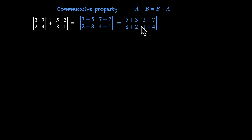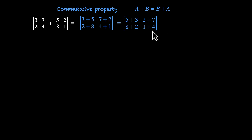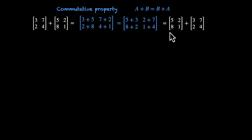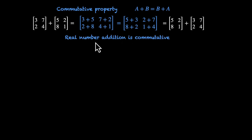We can do the same for the others: 2+7, 8+2, and 1+4. For this element, 3 and 5 don't care whether they are in a matrix — 3+5 can be written as 5+3. Now we can say we have two matrices: the first elements [5, 2, 8, 1] and the second elements [3, 7, 2, 4]. Notice we've flipped the order — we started with [3, 7, 2, 4] and now we start with [5, 2, 8, 1]. We could do this because real number addition is commutative, which makes matrix addition commutative as well.